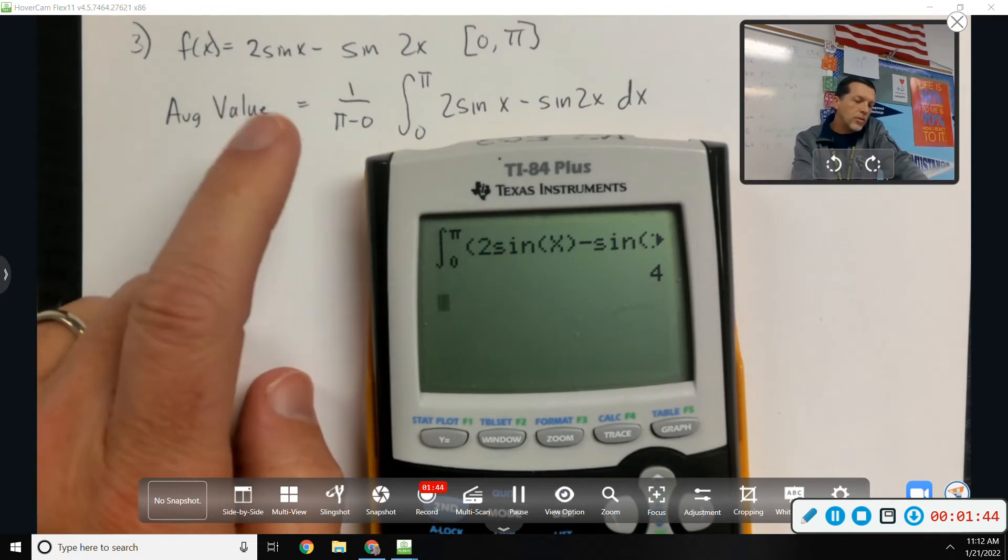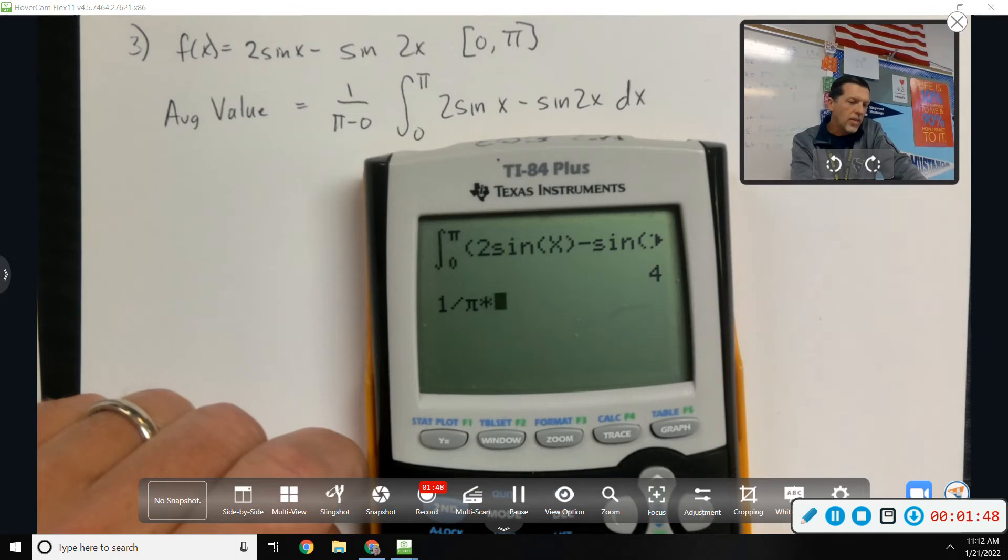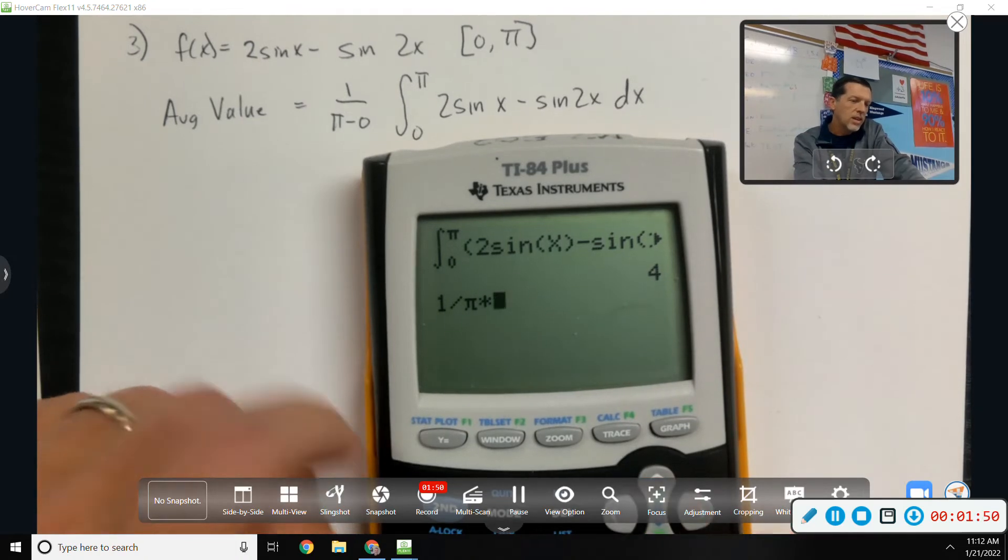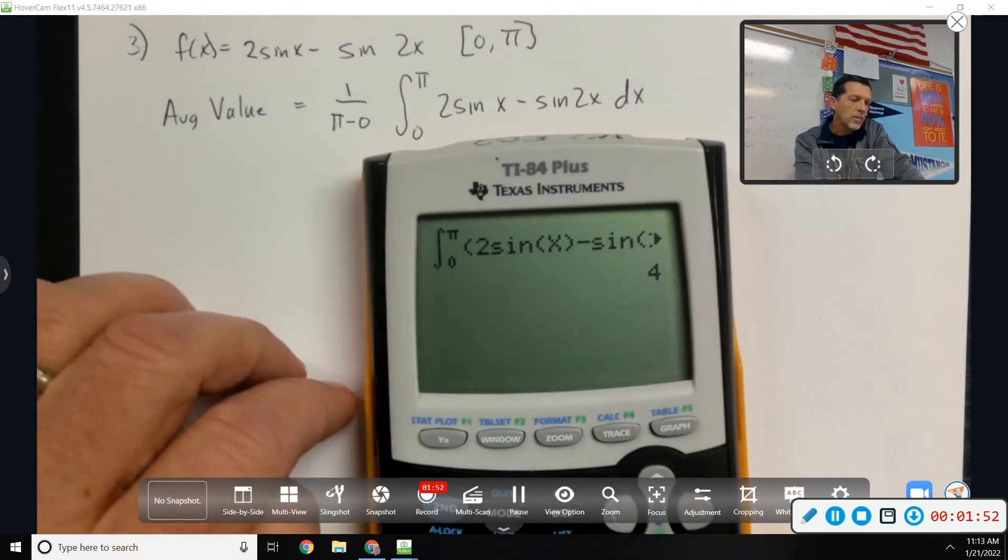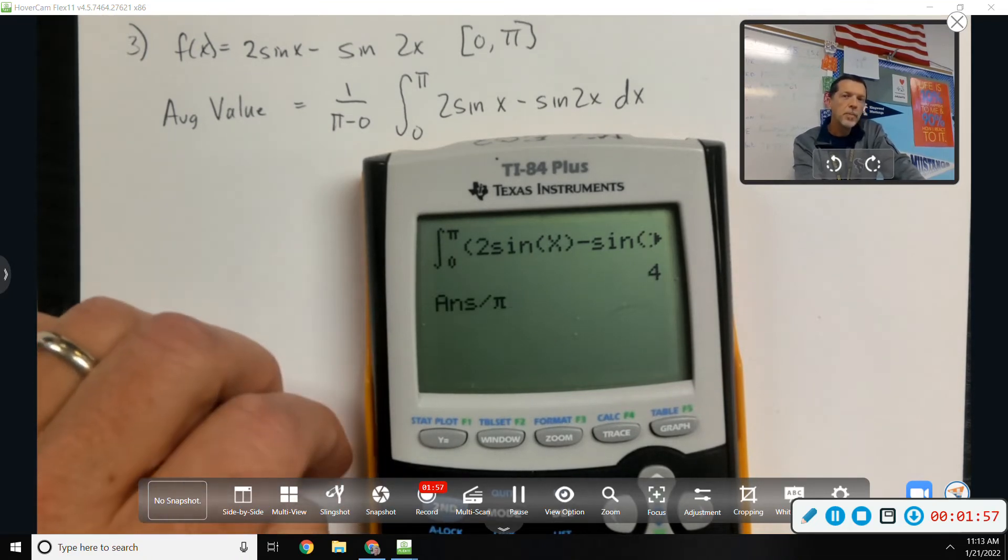I put the complicated thing in the calculator, and sometimes if you do that first, and you get so excited that you get an answer, you forget about the fact that you were supposed to divide by pi. One way to avoid that would be to start by doing one divided by pi, and then putting the integral in. But, a lot of times people type that in and then just hit divide by pi.